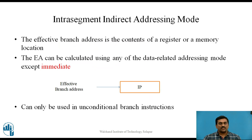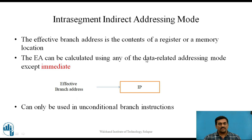The second addressing mode is intrasegment indirect addressing mode. Here the effective branch address is the contents of a register or a memory location. The effective address is calculated using any of the data-related addressing modes except immediate. We can use every data-related addressing mode except the immediate one. The contents of the instruction pointer are replaced by the effective branch address calculated using the data-related addressing mode except immediate. This addressing mode can be used only in unconditional branch instructions.